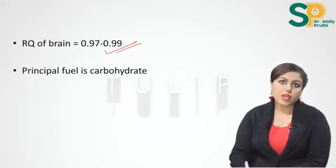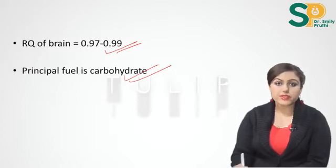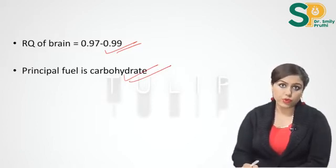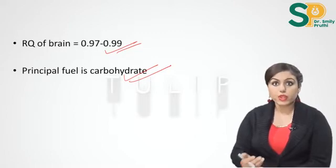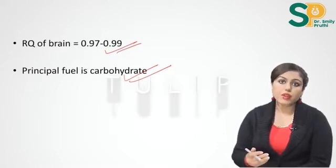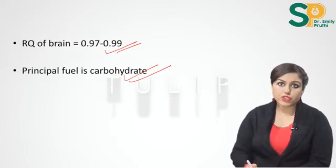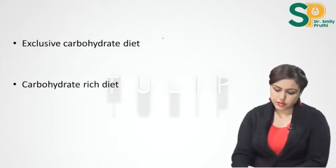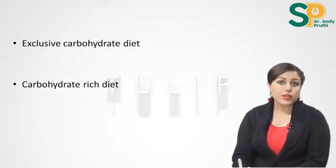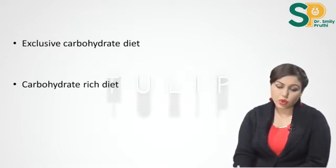RQ for the brain is found to be 0.97 to 0.99, so we can say that the principal fuel for the brain is carbohydrates — it is the principal fuel, not the only fuel. The brain uses glucose in the fed condition and in fasting, but in starvation the brain will shift to ketone bodies.